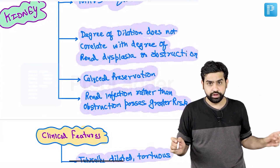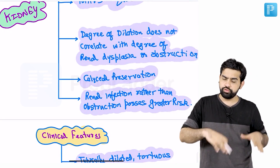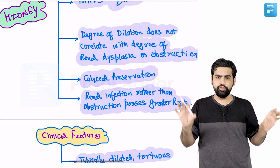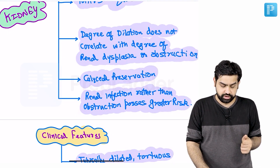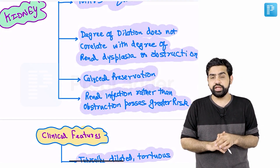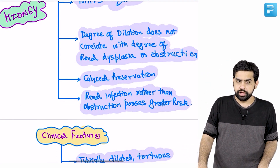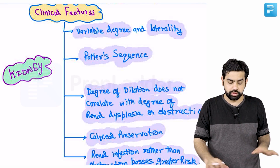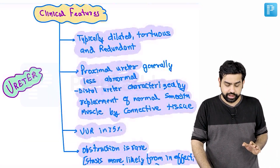Calyceal preservation is a feature of Prune Belly Syndrome — hydronephrosis can occur but the calyces remain more or less normal. Renal infection, rather than obstruction, is the more important concern. Because urine is stagnated in the urinary system, the chances of infection are much higher. Infection is more concerning than the degree of hydronephrosis.